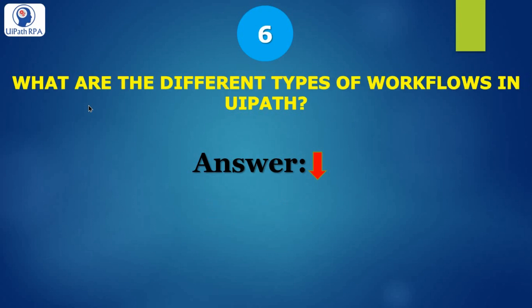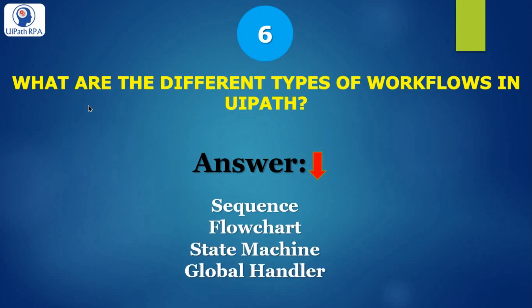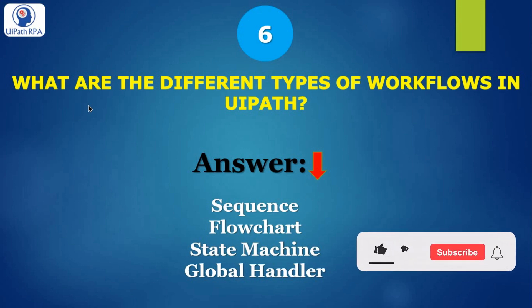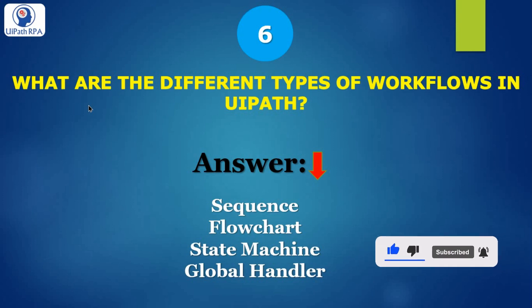What are the different types of workflows in UiPath? There are four different types of workflows available in UiPath: first Sequence, second Flowchart, third State Machine, and fourth Global Handler.